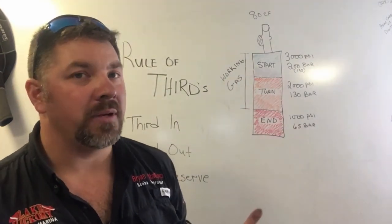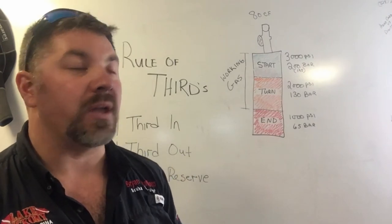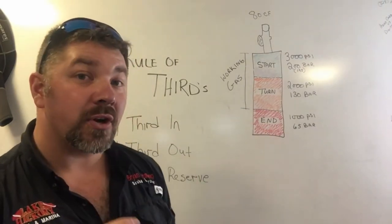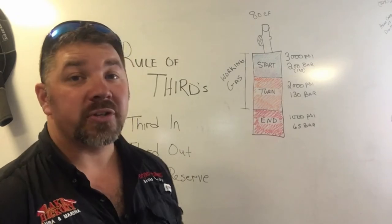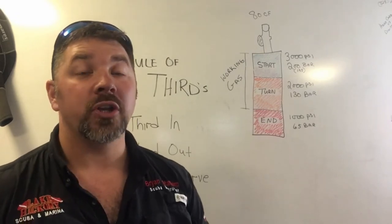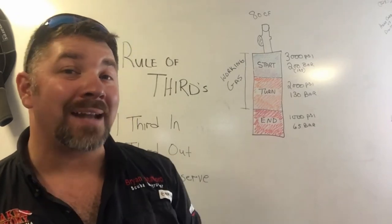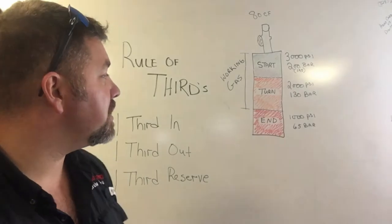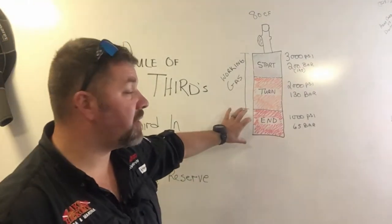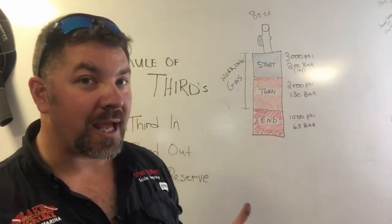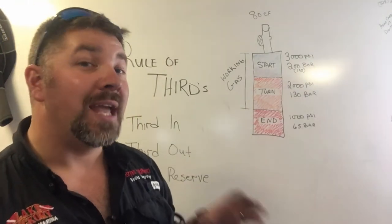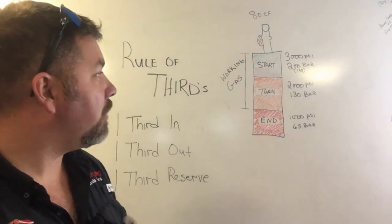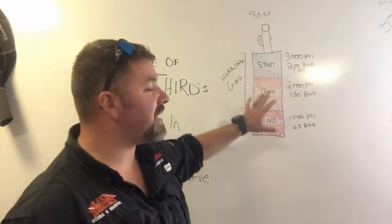The starting pressure is however much air you actually start with. Once you've reached that first third, the turning pressure is how much air we're going to use to make it back to the exit point — say the anchor line or out of that cave section. The last third is what we have when we're completely out of the water, held in reserve for emergencies.